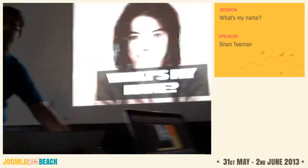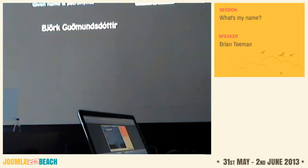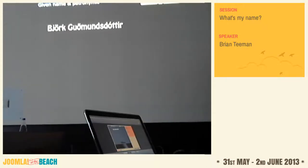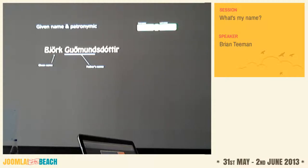We're going to look at a few people around the world and ask: what is their name? The first one — Bjork, a singer from Iceland. Her real name is Bjork Gudmundsdóttir. In Iceland, Bjork is her given name. Gudmund is her father's name, and 'dóttir' means daughter of. The name is unique to her — her brothers have Gudmundsson. In Iceland you'd call her either just Bjork, or Bjork Gudmundsdóttir.